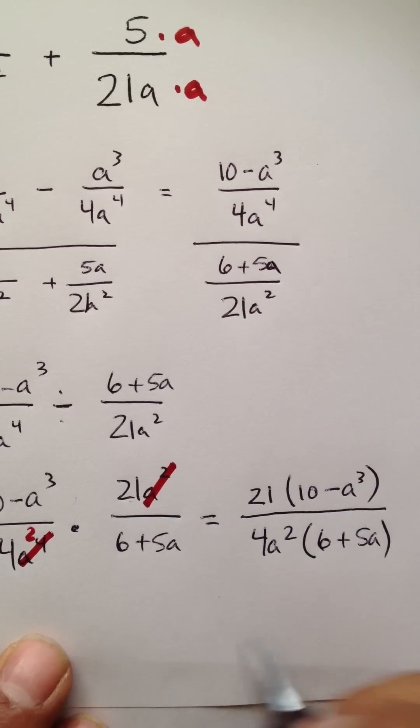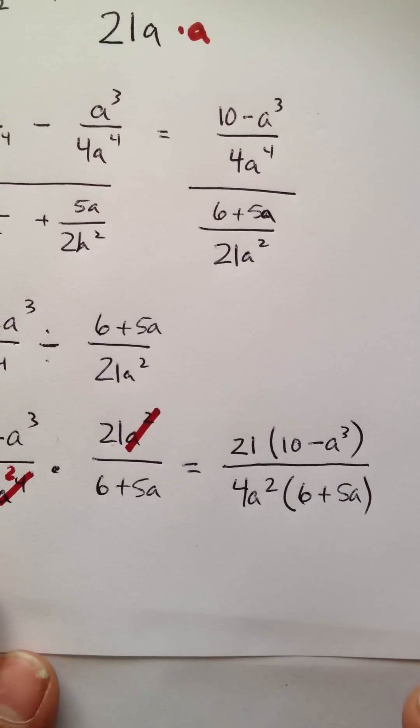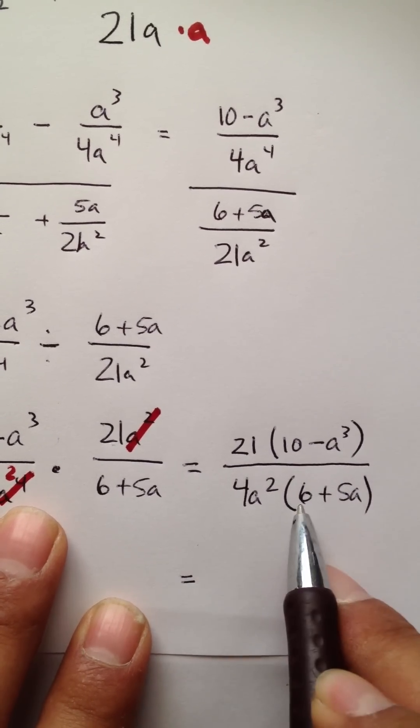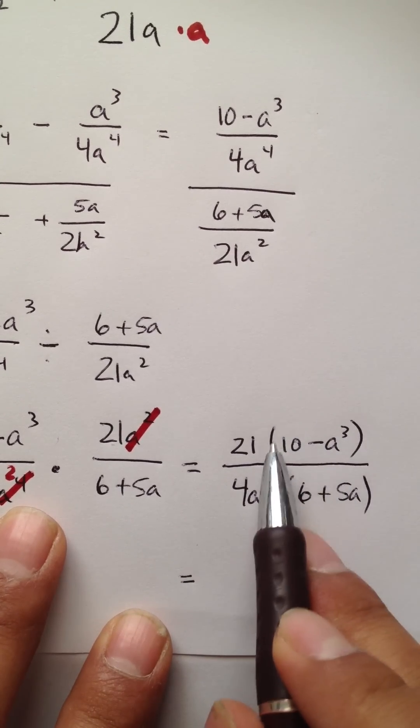Now, some professors actually get a little picky when it comes to problems like this. So, my advice is rewrite this in descending order and factor out a negative.